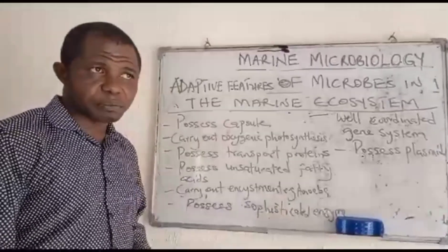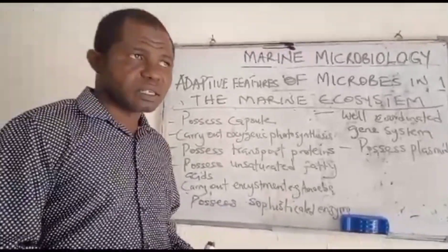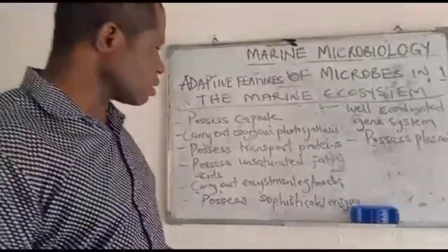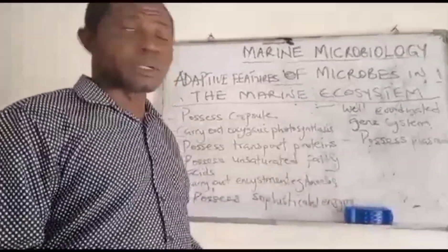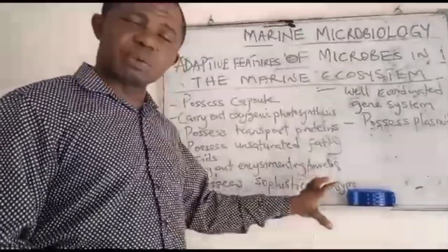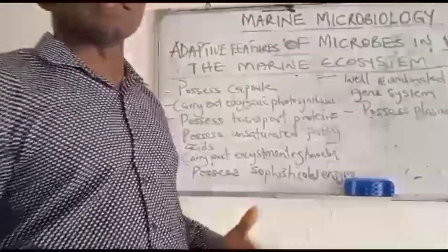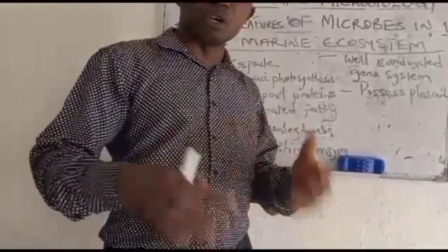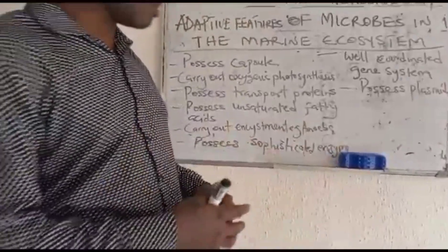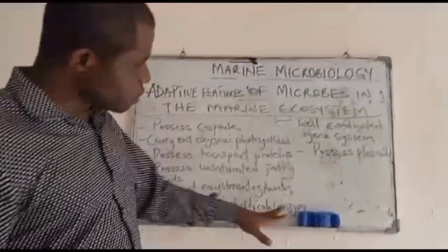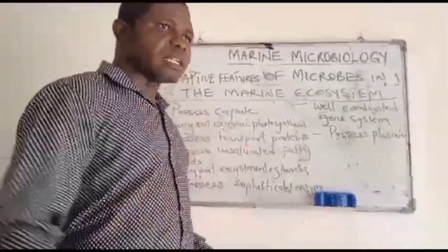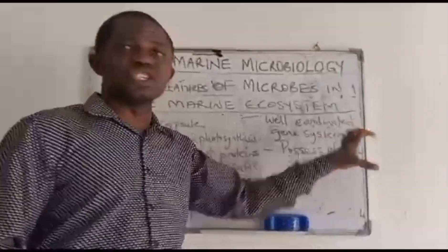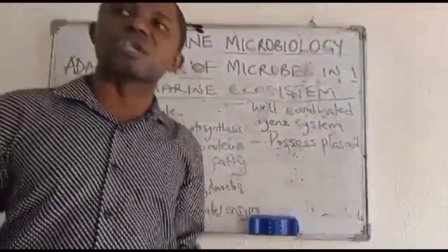Five, they carry out encystment, producing cysts to fight enemies as a survival strategy — for example, the amoeba in that ecosystem. Six, they possess sophisticated enzymes, which are organic catalysts that speed up chemical reactions and metabolic processes to break down substrates and absorb them as food. Seven, they have a well-coordinated gene system for transcription and translation.